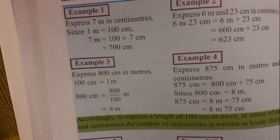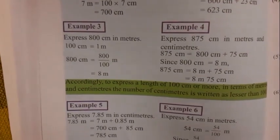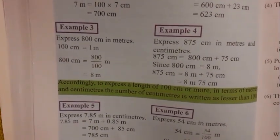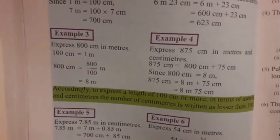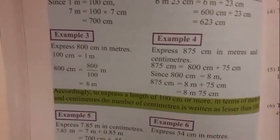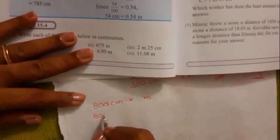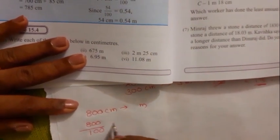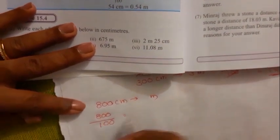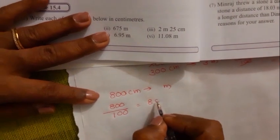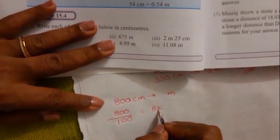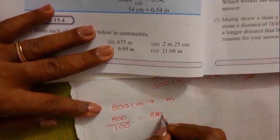Example 3: Express 800 centimeters in meters. You take 800 centimeters and convert into meters, so you divide by 100 — 800 divided by 100 — giving 8 meters.